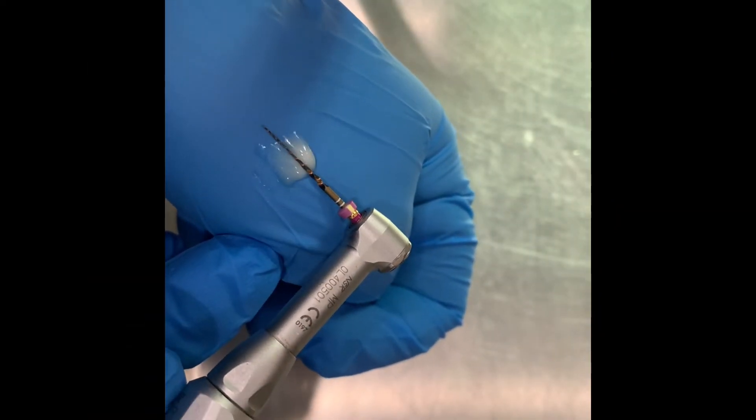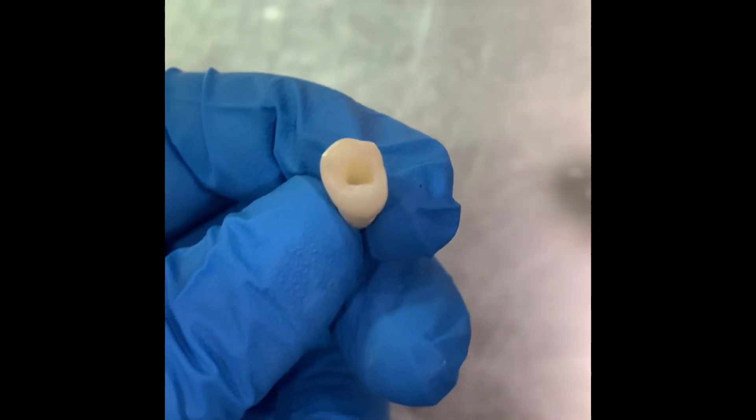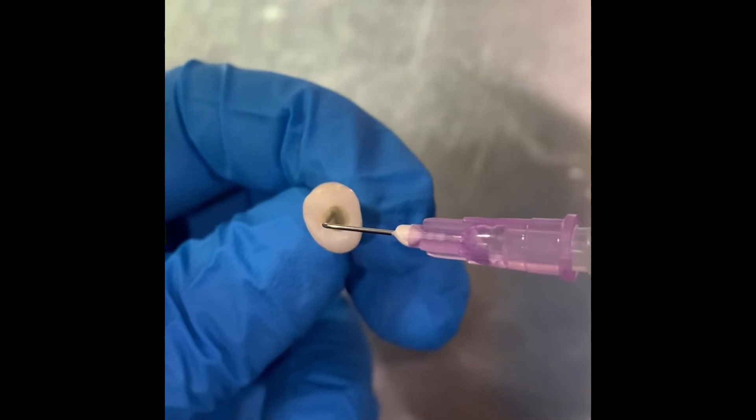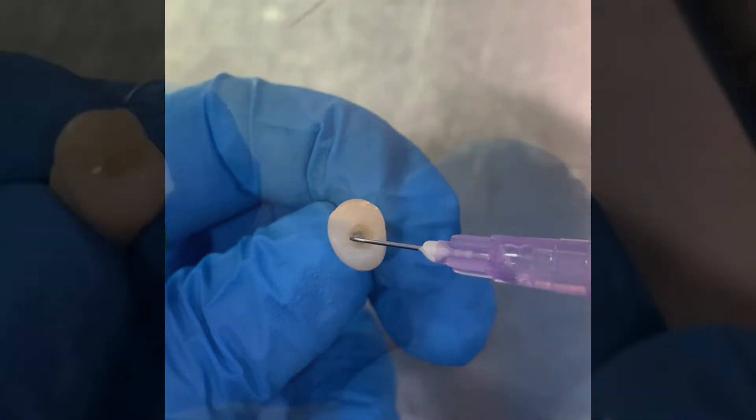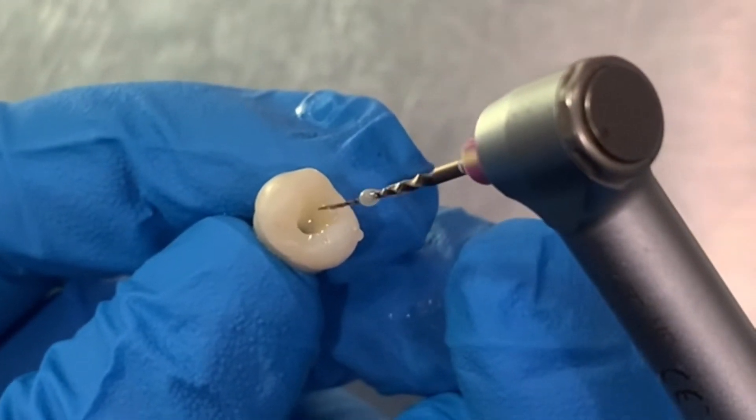Before starting the canal preparation, coat the file with EDTA. The canals should not be dry; they should be filled with saline or sodium hypochlorite solution. The file should be rotating when it is placed in the canal.